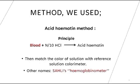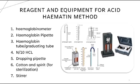The method we used was the acid hematin method, in which we took 20 microliter of blood along with N/10 HCl on the reactant side and got the acid hematin solution on the product side. We matched the color of the solution with the reference solution color meter, also known as the Sahli hemoglobin meter. The reagents and equipment used are: cotton and spirit for cleaning; the hemoglobin meter (Sahli hemoglobin meter), which has two reference strips and a central space for the graduated tube where we add our sample; N/10 HCl; the hemoglobin pipette to draw blood; a dropping pipette to add HCl drop by drop into the blood; and a stirrer to mix the blood and N/10 HCl.